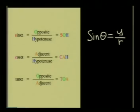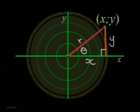we can write the ratio of sine of an angle as y divided by r. Now, let's look at cos. Cos of an angle is equal to adjacent divided by hypotenuse.